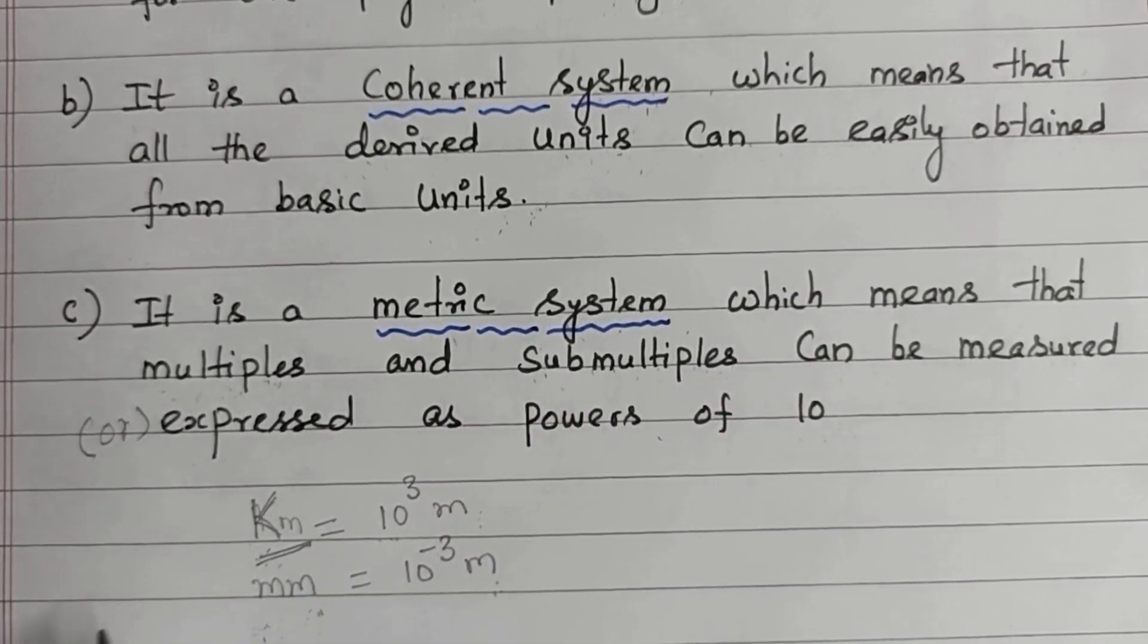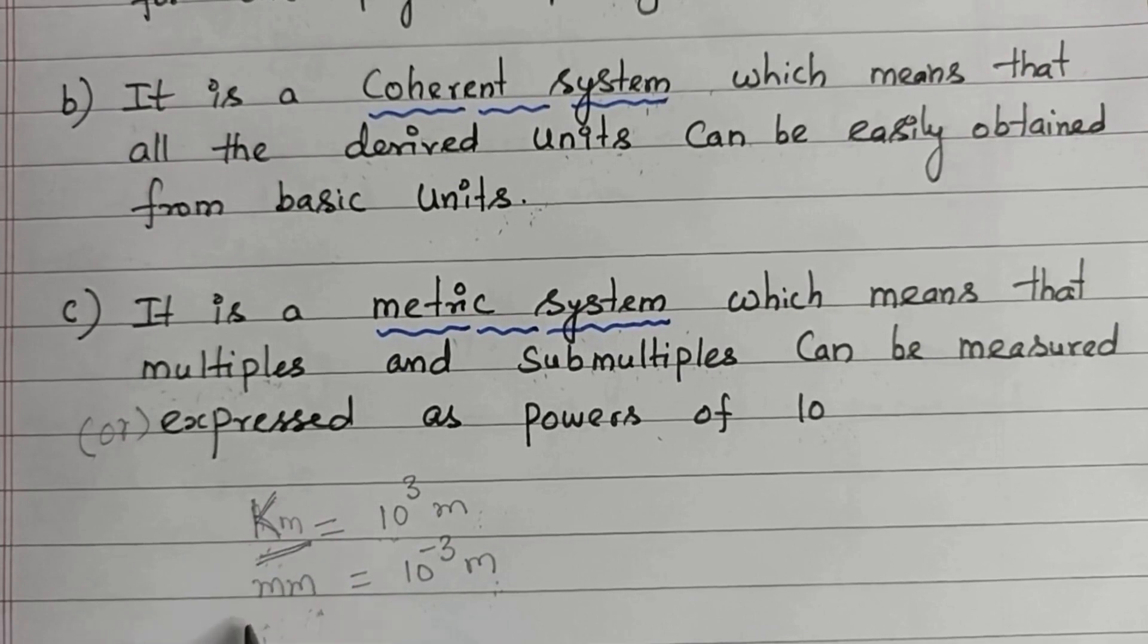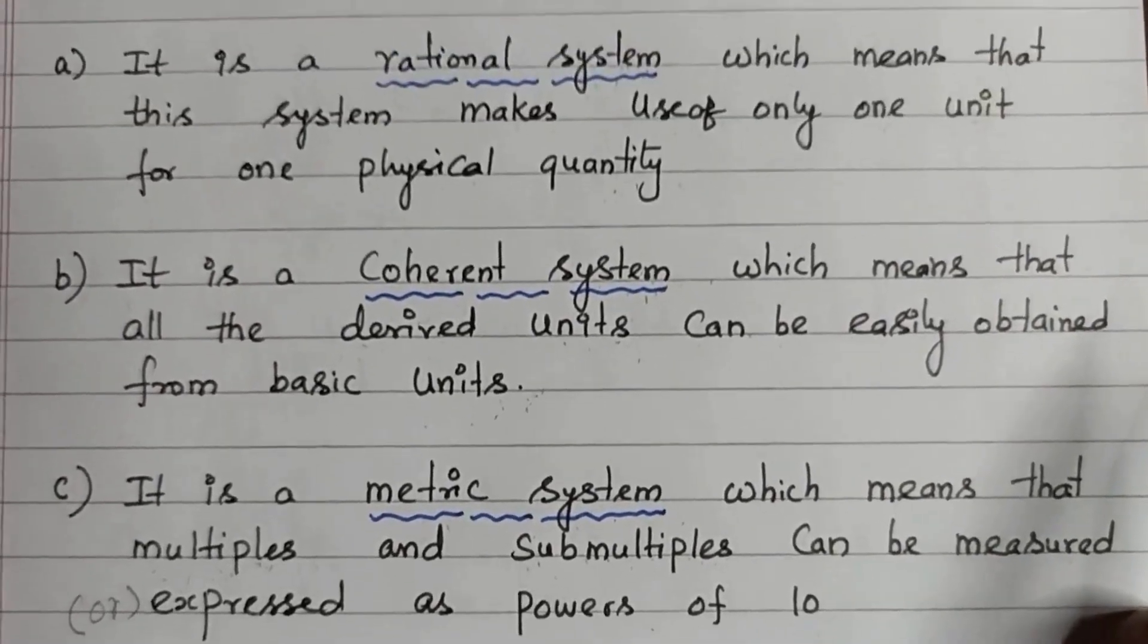For example, to measure longer distances, we use the unit kilometer, which can be expressed as 10 to the power 3 meters. For measuring small distances, we use the unit millimeter, which can be written as 10 to the power minus 3 meters. So higher units or lower units can be expressed as powers of 10. These are the advantages of SI Unit System.